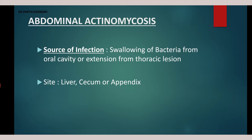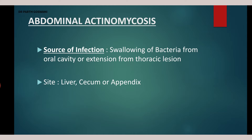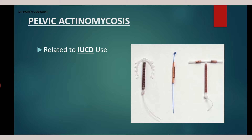The third category is abdominal actinomycosis, where there is GI tract involvement. It can infect the ileum, cecum, appendix, and the liver. The source of infection is swallowing of bacteria from the oral cavity, or extension from a nearby infected area such as the lung.